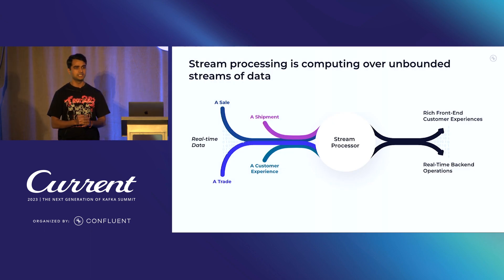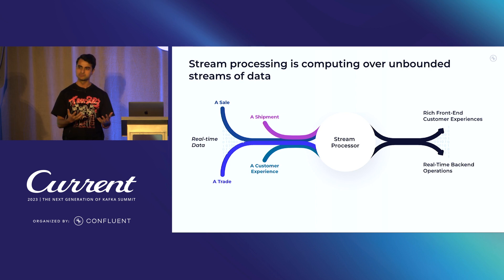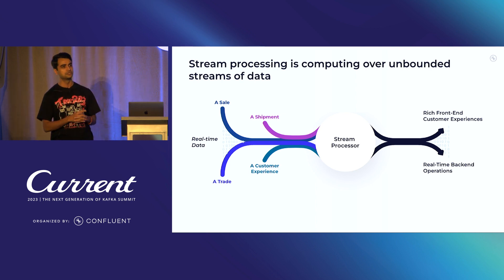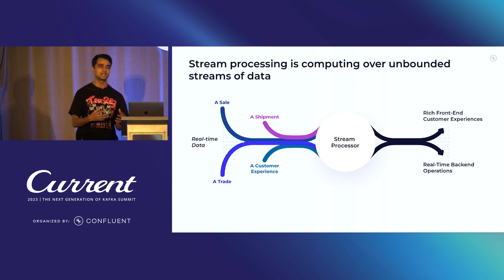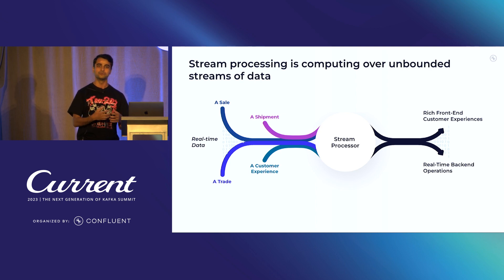Stream processing is computing over unbounded streams of data. If you watched the keynote, you know that we see this as a generalization of batch processing. When anyone asks why you need real-time processing, there are certain use cases where you can't wait for the processing to happen — for example, fraud detection. When you go into real-time applications, you'd expect the processing to happen in real-time.